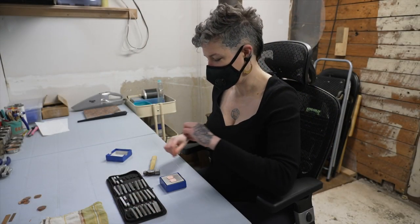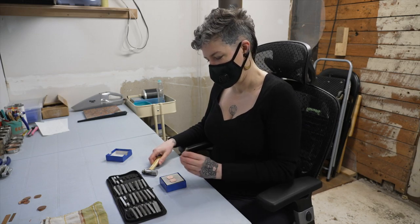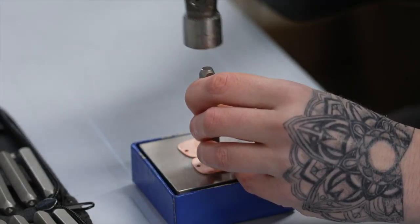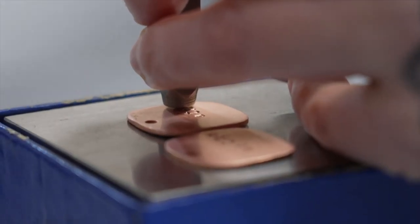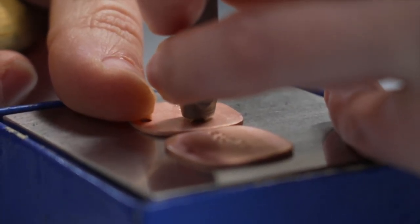Using an anvil and letter stamp set, the artist begins with the middle letter of the word to help manage the spacing. The stamping is done after the first firing because the copper is much softer and takes the stamp with less effort.